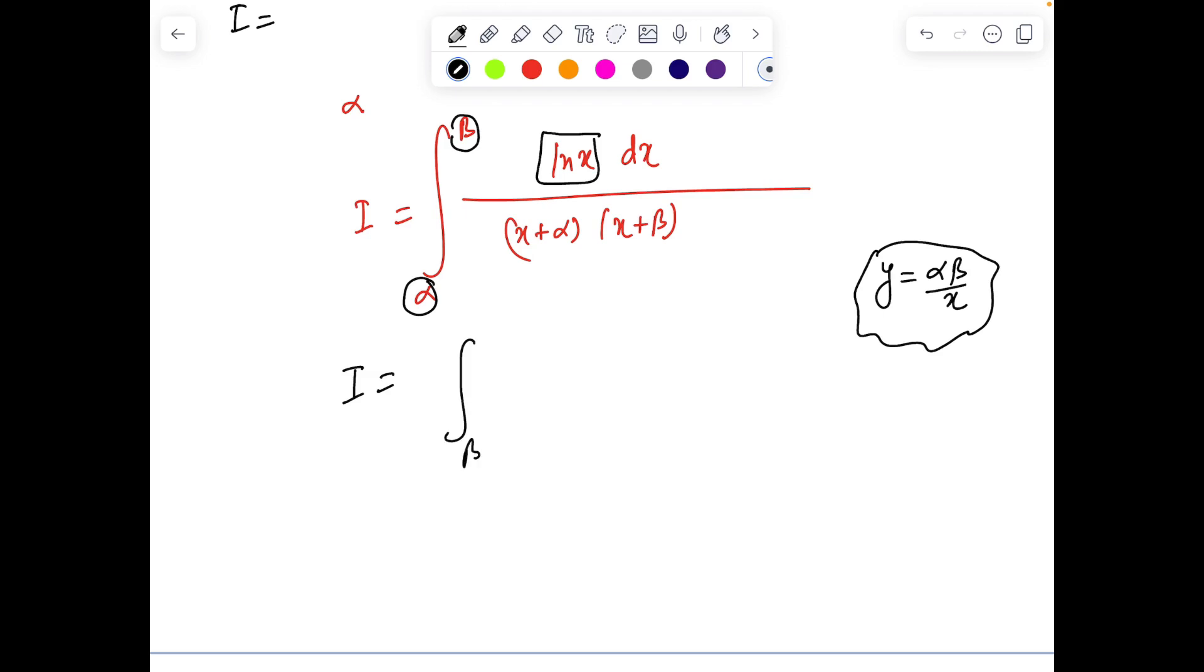The motivation for this is that this substitution converts α to β and β to α. When x is α, this becomes β, and when x is β, it becomes α. ln x becomes ln(αβ) - ln y.